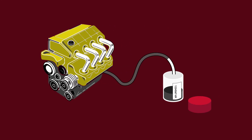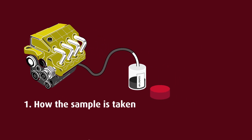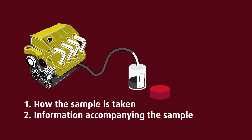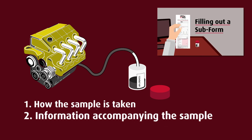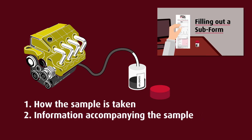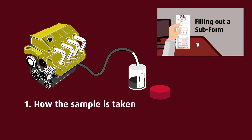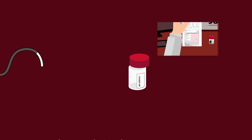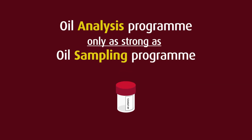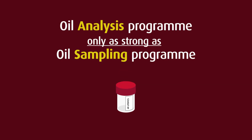The accuracy of analysis of an oil sample is greatly influenced by two aspects of the whole procedure that the customer controls: how the sample is taken and the information accompanying the sample. The latter has been dealt with in our video on filling out a wear check subform. This video will focus on the correct sampling procedure to follow when extracting an oil sample. It must be emphasized that an oil analysis program is only as strong as the oil sampling program.